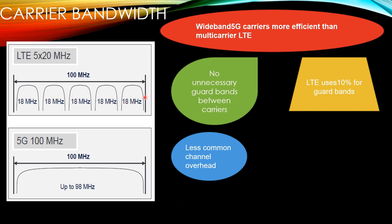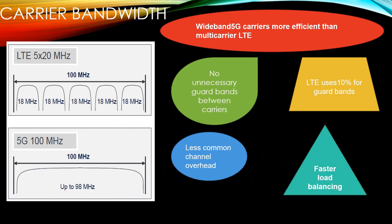There is less common channel overhead in 5G. With five carriers in LTE, every carrier needs its own common channels, creating a lot of overhead. With one 98 MHz carrier in 5G you only need one common channel, avoiding a lot of overhead. Also, people who work in LTE know the headache of load balancing between five carriers — all of that is avoided when you have only one 100 MHz carrier.